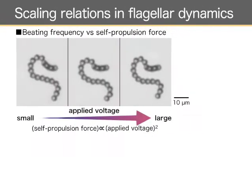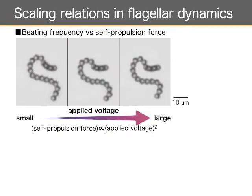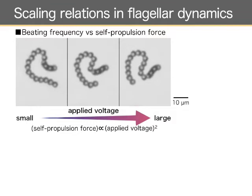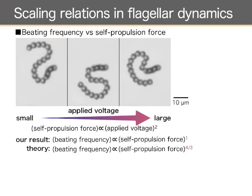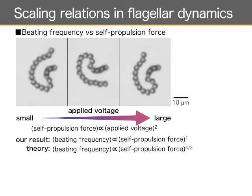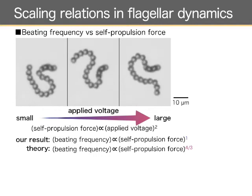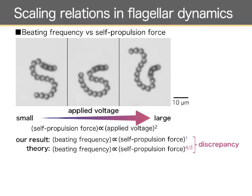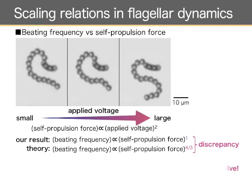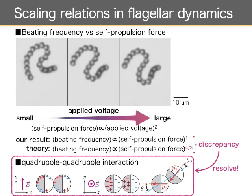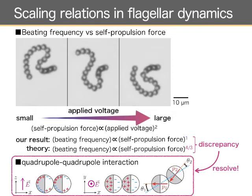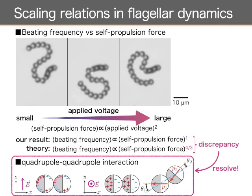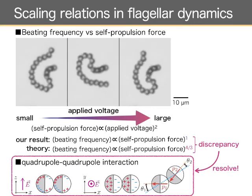In our system, the self-propulsion speed or self-propulsion force can be controlled by the applied voltage. Taking this advantage, we studied how the beating frequency scales with the self-propulsion force of the composing particles. Our experiment shows that the beating frequency was proportional to the self-propulsion force. However, this scaling relation deviates from theoretical predictions made previously. We resolved this discrepancy by taking into account the quadrupole-quadrupole interactions of the Janus particles. Moreover, our measurement gives indirect but the first reliable experimental evidence on the quadrupolar charge distribution of the particles.